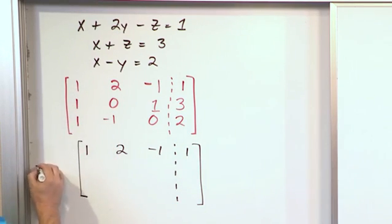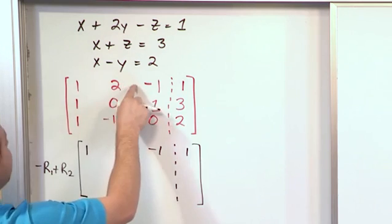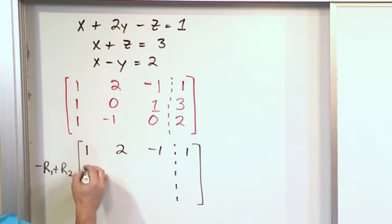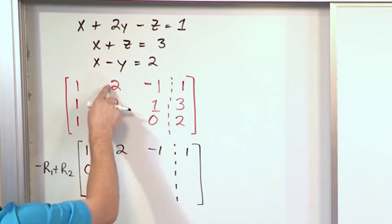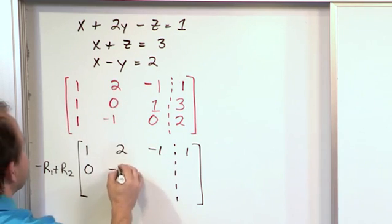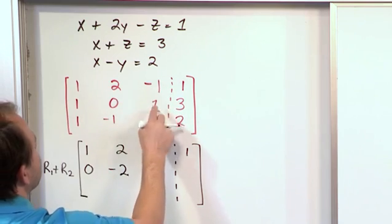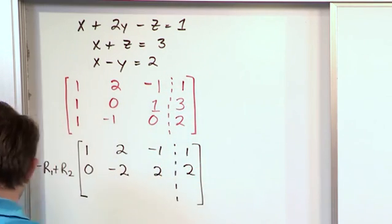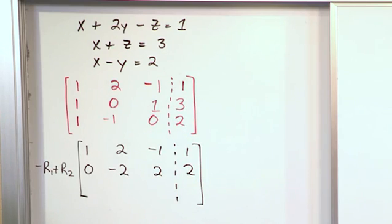So on the second line, I want to take negative R1 plus R2. I want to take a negative 1 and multiply it by these elements and add it below. When I take negative 1 times this and add it here, I get a 0. Negative here and then add it here, I get negative 2. Negative times this gives me positive 1 plus this gives me a 2. Negative here plus this gives me a positive 2. So, so far I'm doing well.